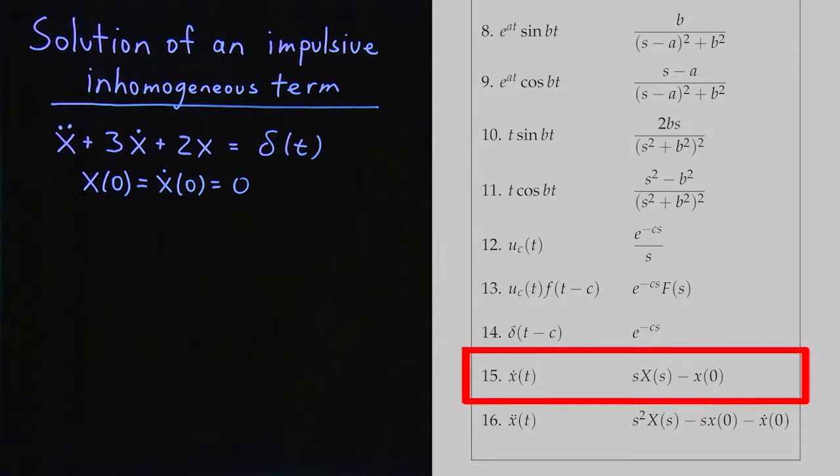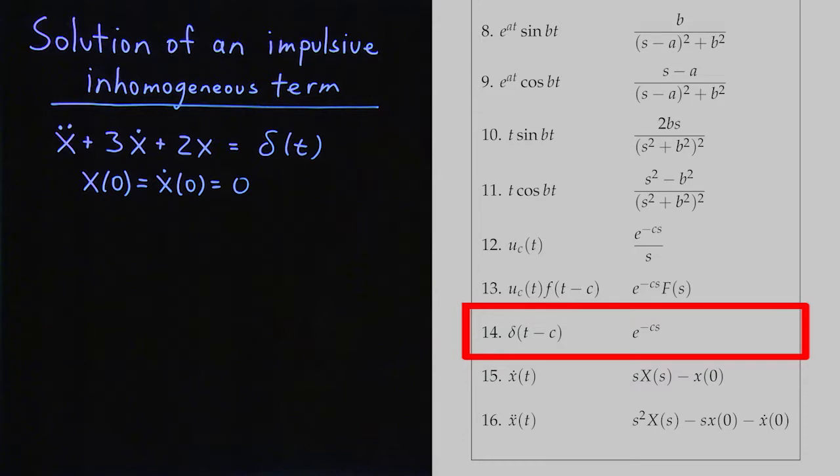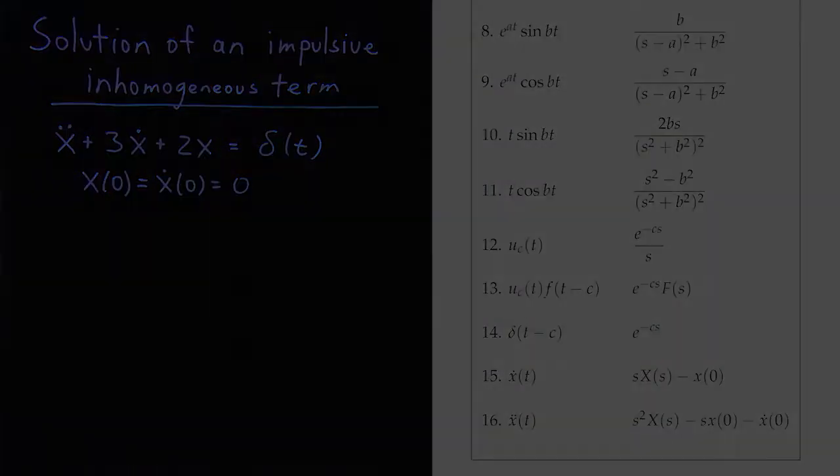That's equal to the Laplace transform of the Dirac delta function. The Laplace transform of delta of t with c equals zero then would just be 1 from line 14.